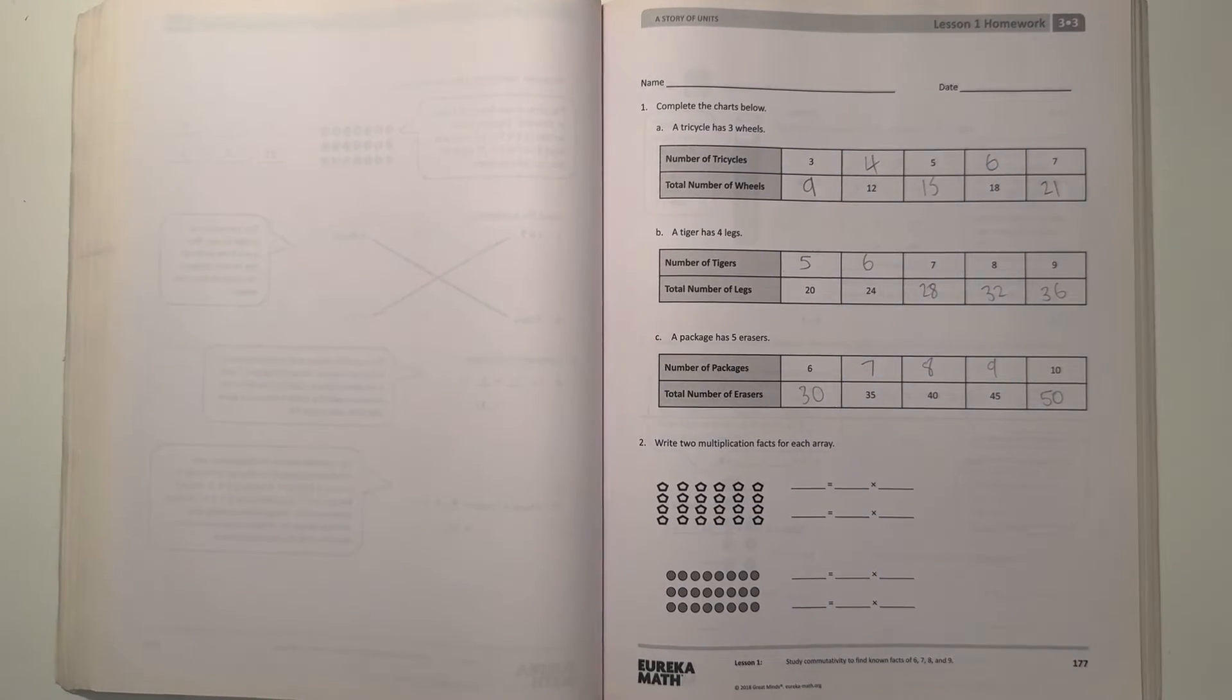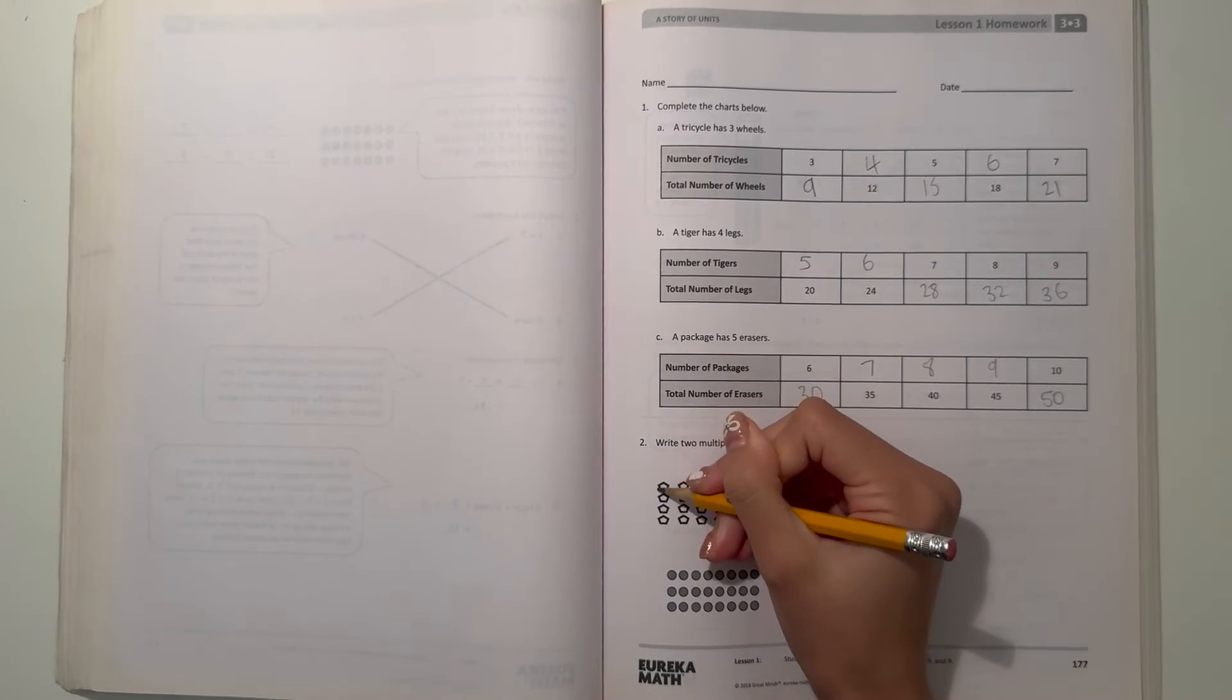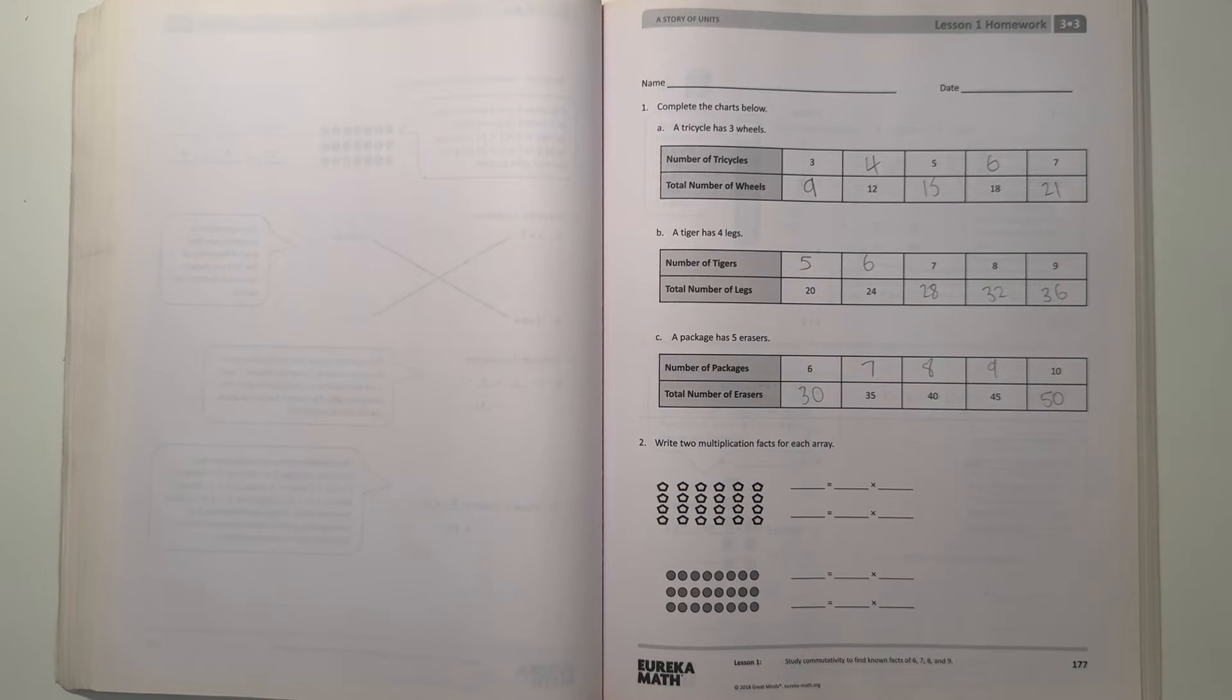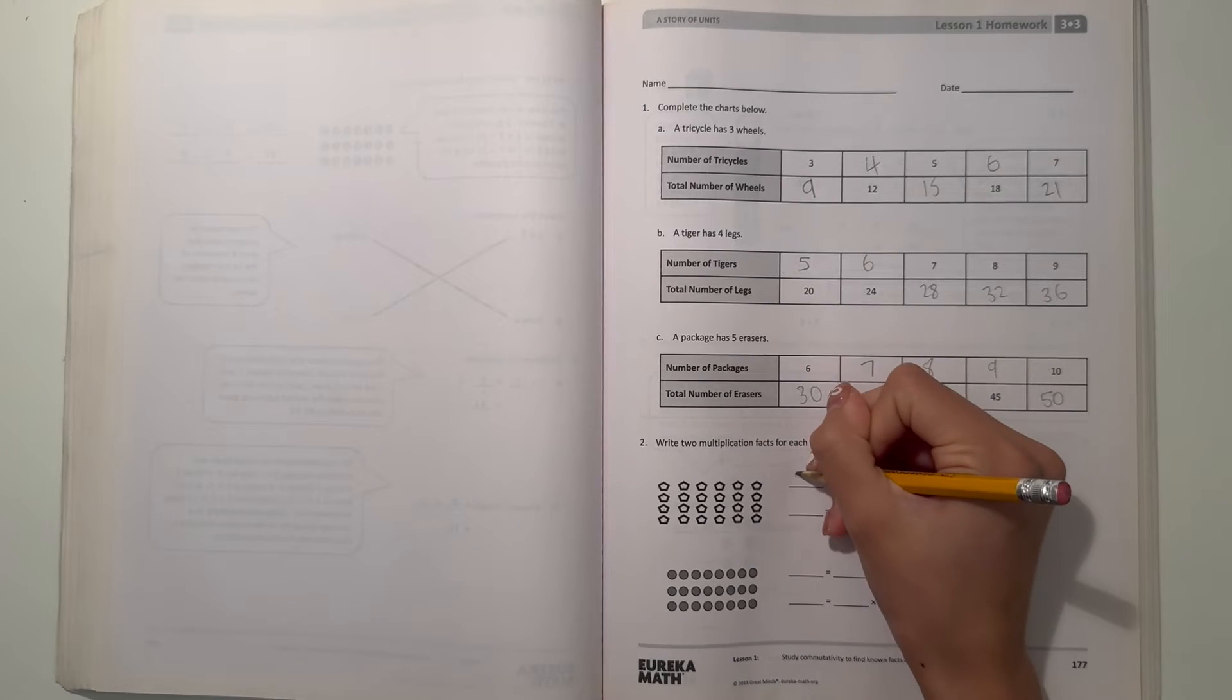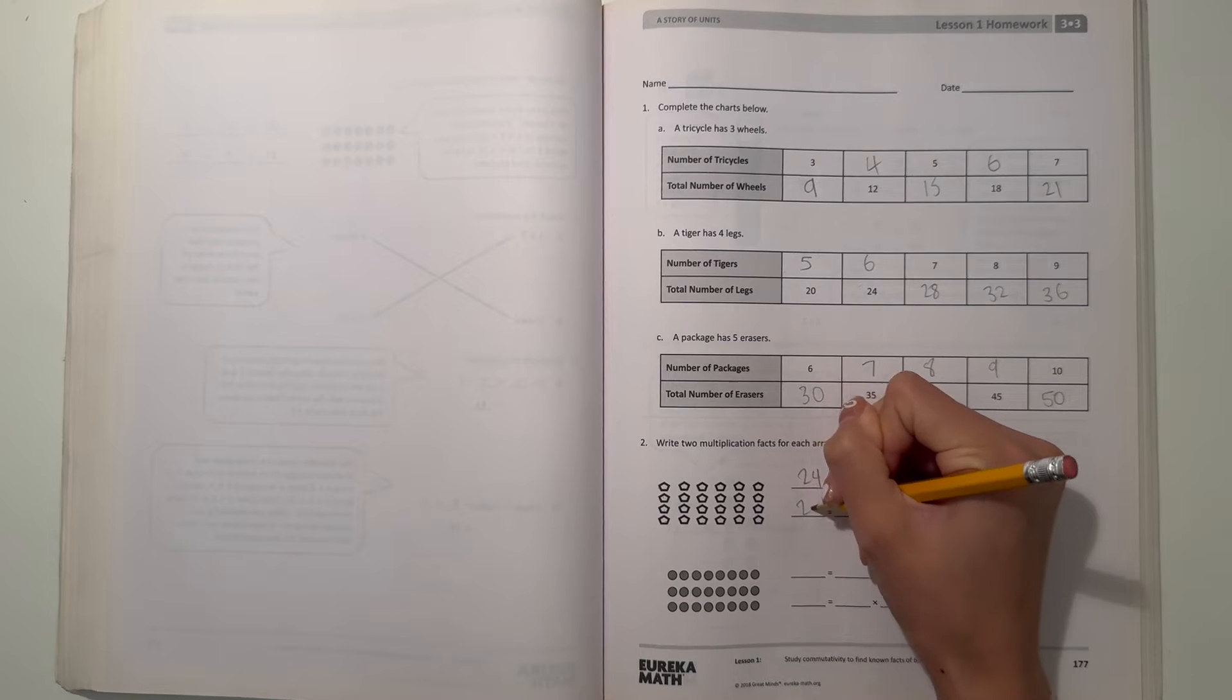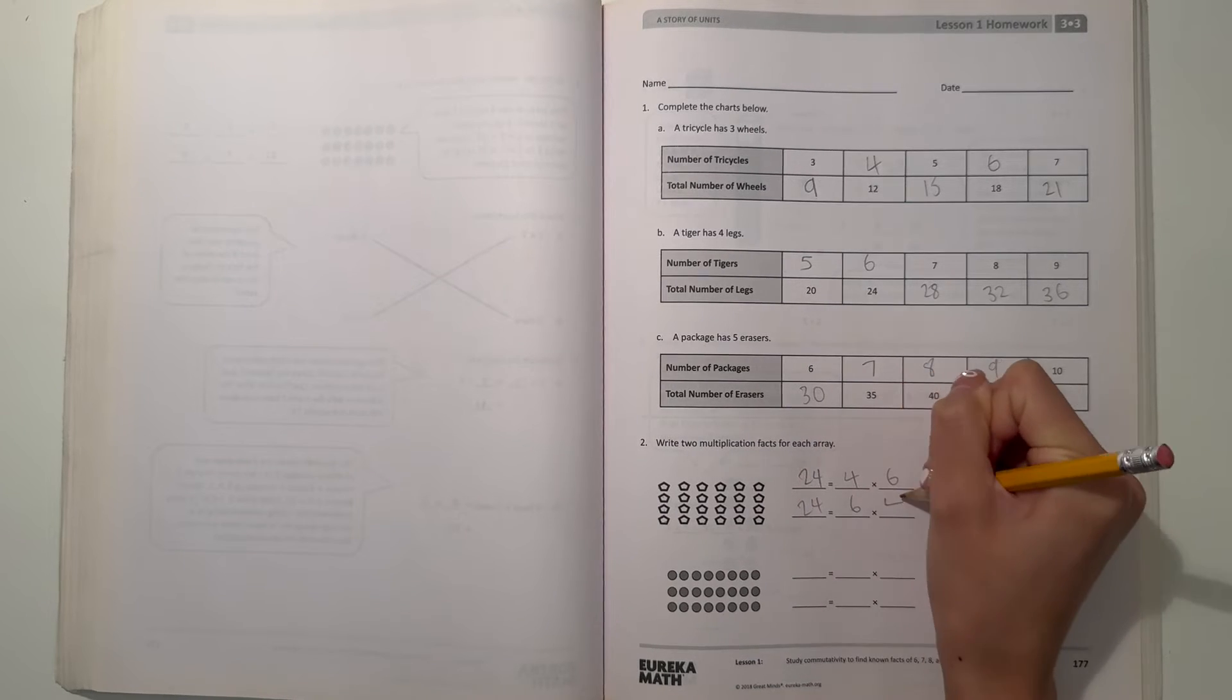And now number 2, write 2 multiplication facts for each array. Well, let's see. This array has 4 rows by 6 columns. So 4 times 6 is 24. So 24 equals 4 times 6, and 24 equals 6 times 4.